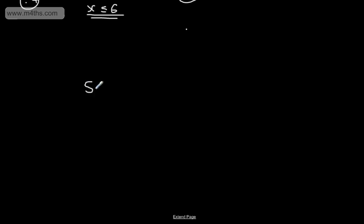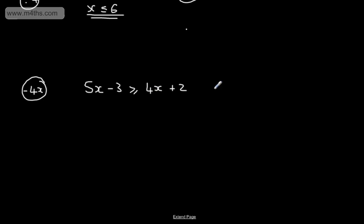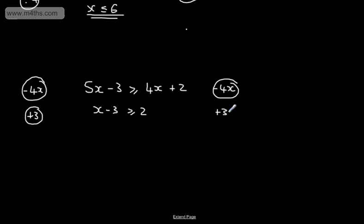Let's say we've got 5x minus 3 is going to be greater than or equal to 4x plus 2. We've got unknowns on both sides of the inequality. We do exactly the same as solving an equation: subtract 4x from both sides. On the left-hand side we have x minus 3 greater than or equal to 2. We then add 3 to both sides, giving x is greater than or equal to 5. You can go ahead and substitute it in to check it satisfies the inequality.